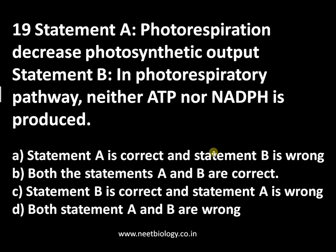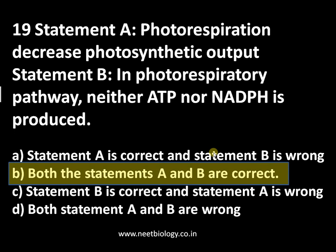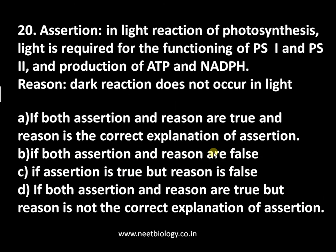Question number nineteen: Statement A — photorespiration decreases photosynthetic output. Statement B — in the photorespiratory pathway, neither ATP nor NADPH is produced. Options: A: statement A correct, B wrong; B: both correct; C: statement B correct, A wrong; D: both wrong. The answer is both statements A and B are correct. Photorespiration involves expenditure of ATP without production of ATP or NADPH, which is why it decreases photosynthetic output.